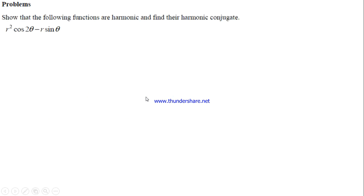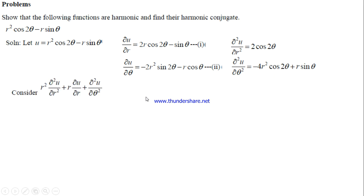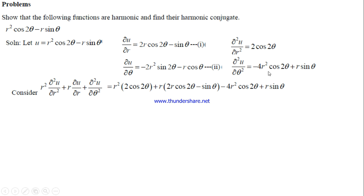Polar form example: Show that the given function is harmonic and find its harmonic conjugate. Assuming the function as u, we find ∂u/∂r, ∂²u/∂r², ∂u/∂θ, and ∂²u/∂θ². The polar Laplace equation is r²·∂²u/∂r² + r·∂u/∂r + ∂²u/∂θ² = 0. Substituting and simplifying, everything cancels to 0, proving the function is harmonic.